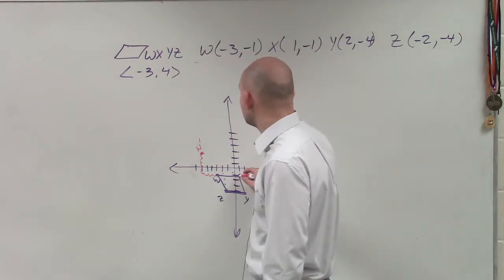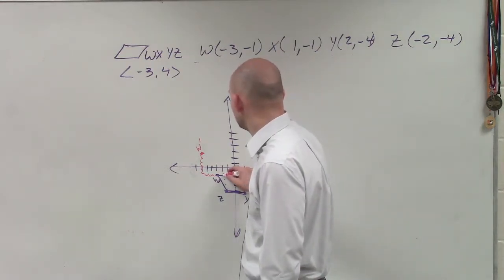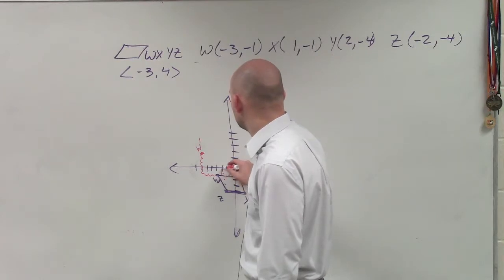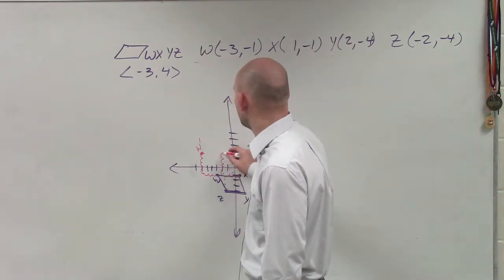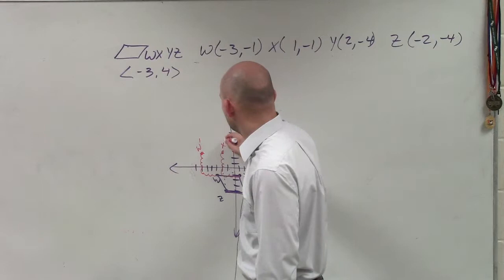X, move it over three units to the left, one, two, three, four units up. One, two, three, four. That's X prime.